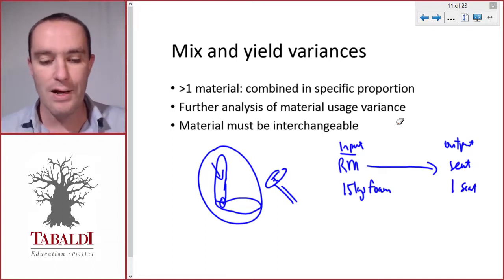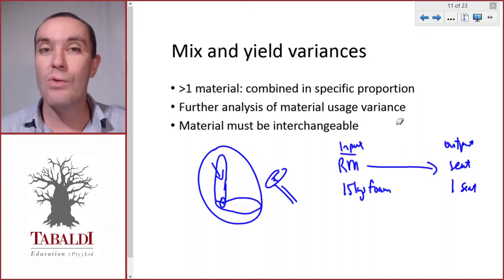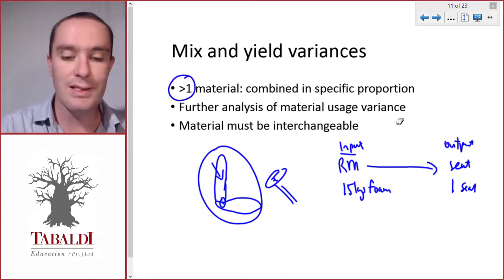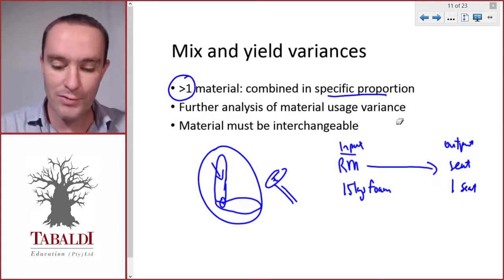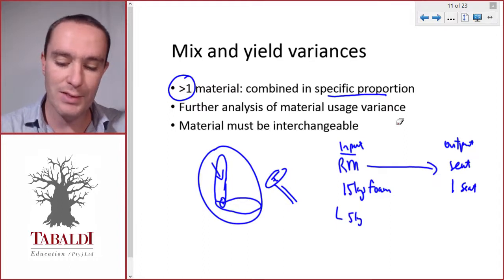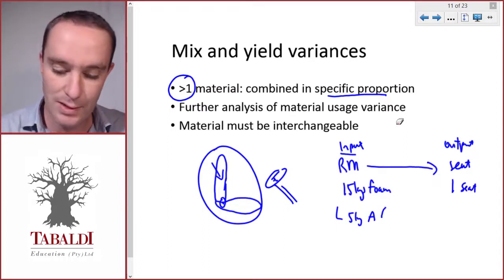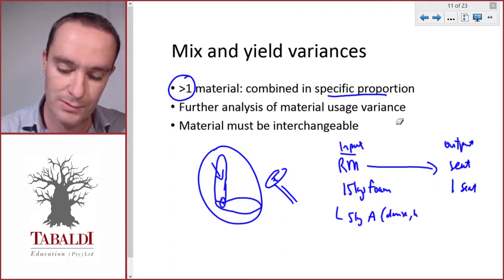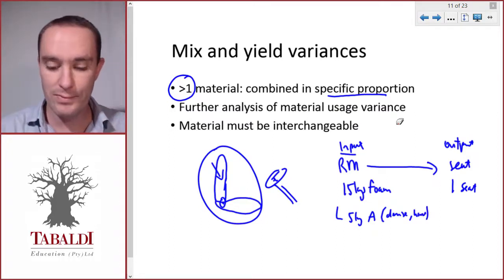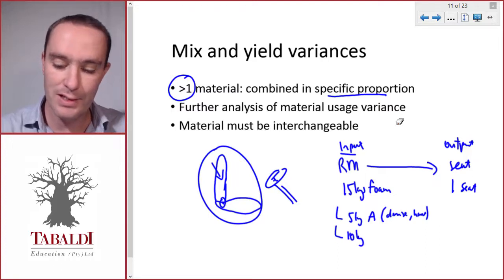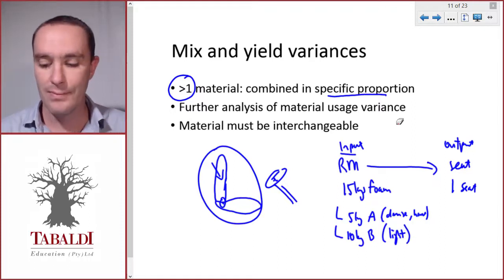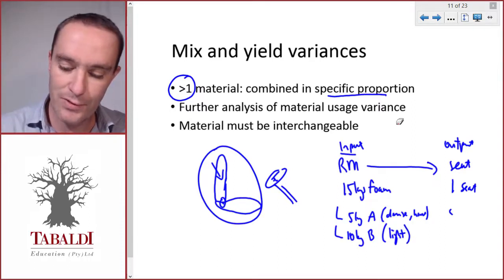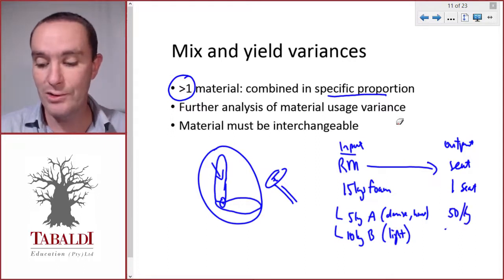But let's say there's more than one type of foam, so there's more than one material that is used in a specific proportion. Of the 15 kilograms of foam, 5 kilograms is foam type A, which is dense and hard - a good quality foam. And then 10 kilograms is foam type B, that is lighter and less dense. The cost is $50 per kilogram for foam type A and only $20 per kilogram for foam type B.